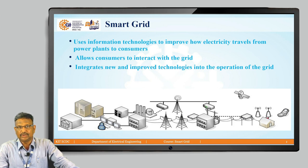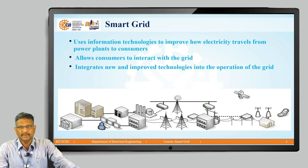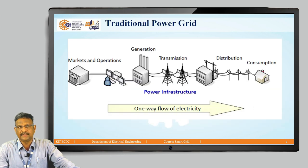Smart grid integrates new and improved technology into the operation of the grid. This figure shows the overall network topology where the communication network, the electricity generating system, the electricity transmission system, and the consumer system are all present.